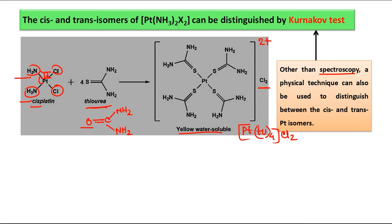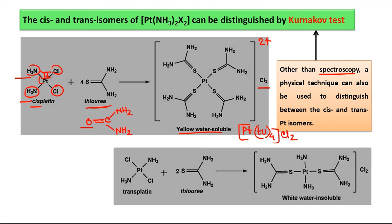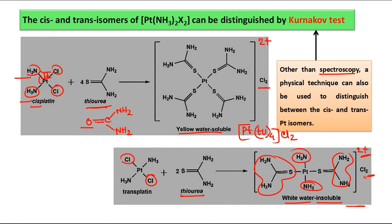If we cool the solution we can get yellow needle-shaped crystals. For the trans complex, only two thiourea molecules are required — only the two chlorine ligands are replaced by two thiourea. When two chloride ions are removed, to balance the 2+ charge, since the two thiourea and two ammonia remaining are all neutral ligands, two chloride ions go outside the coordination sphere. Comparing solubility, this complex is insoluble, so there will be white precipitate formation.